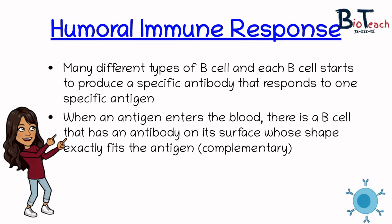There are many different types of B-cell and each B-cell starts to produce a specific antibody that responds to a specific antigen. There will be a B-cell in the blood which has an antibody on its surface whose shape is complementary. Millions of B-cells will form during development.